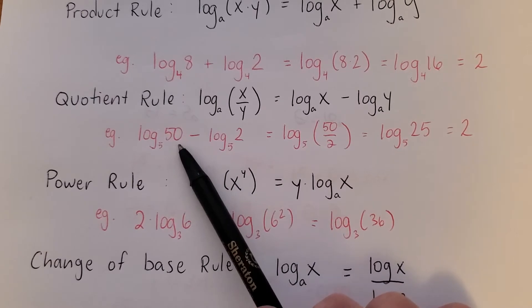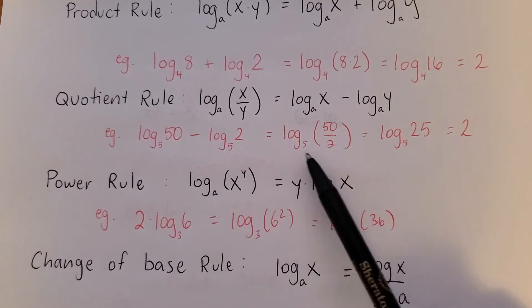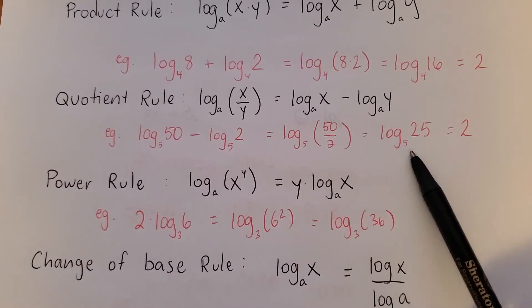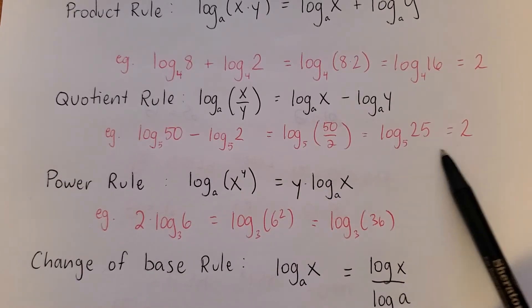5 to the power of what equals 50? No idea. Right? But you can make them one log. 50 divided by 2 is 25. This is real easy. 5 to the power of 2. So our answer is 2.